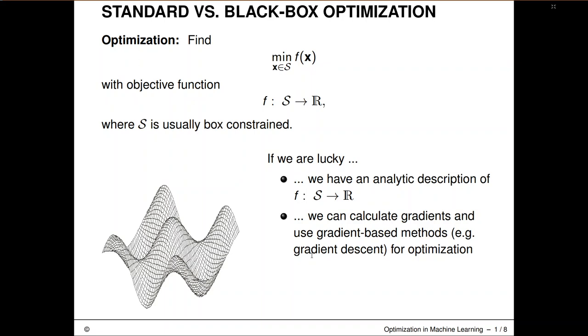Usually our feasible area S is simply defined by some box constraints, so we have upper and lower bounds for each of our numerical decision variables. And hopefully, if we are lucky, this is the scenario we considered before in the rest of the lecture, with an analytical description of f. So f is defined by some mathematical formula, and we can potentially even calculate gradients so we can exploit its analytical white box structure.